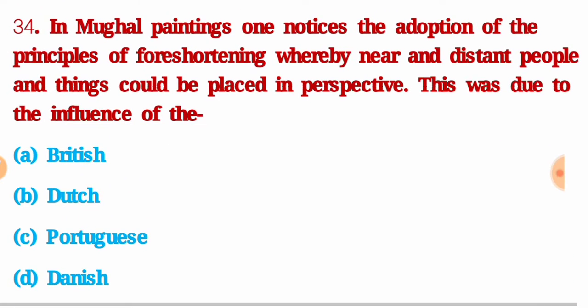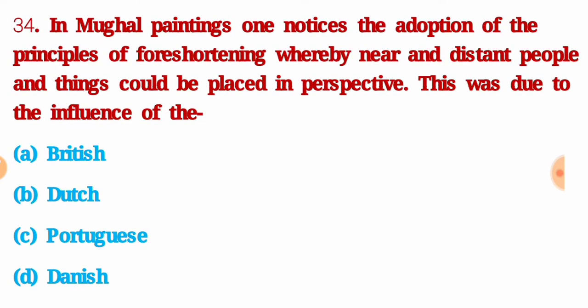Next question: in Mughal paintings one notices the adaptation of the principle of foreshortening, whereby near and distant things could be placed in perspective. This is due to the influence of — the right answer is option C: Portuguese.